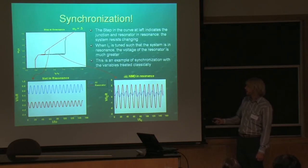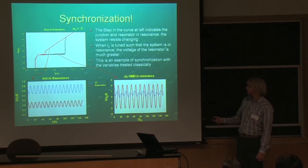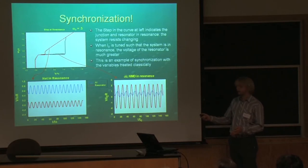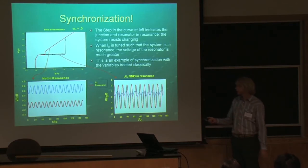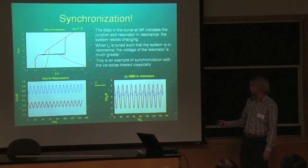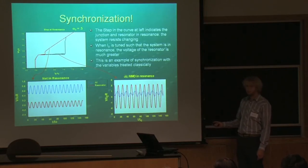This graph here shows time-averaged voltage versus the bias current we're running across this system for the junction. As you can see, with the junction and the two coupled together, we get this nice step here, which is evidence of the synchronization between the two. If you increase the bias current, even though normally the voltage of the junction would increase, it stays constant because the two are in resonance. As you can see in these graphs, which correspond to in-resonance and not-in-resonance: when you're in resonance, the NMO is at its natural frequency, so it oscillates with a much higher voltage than otherwise.